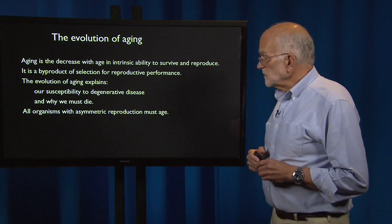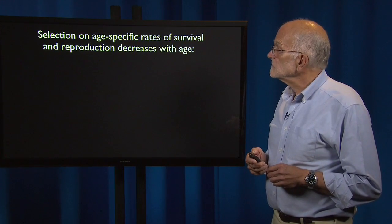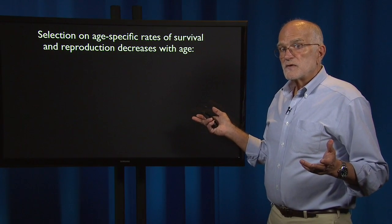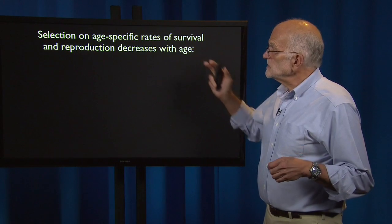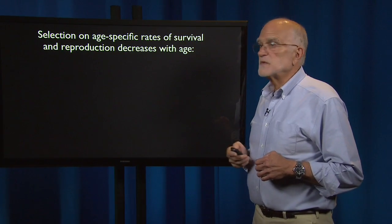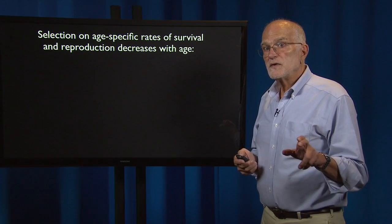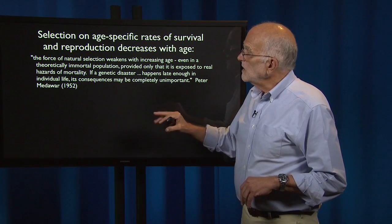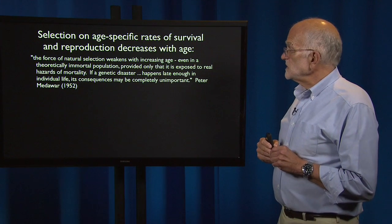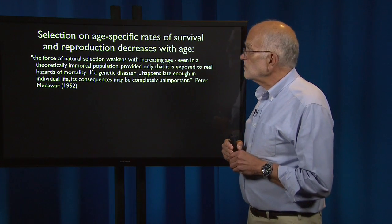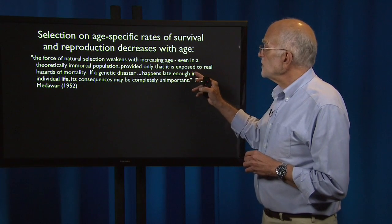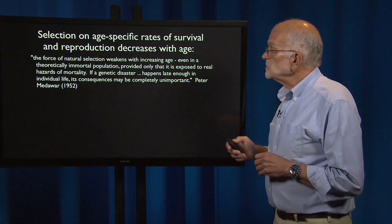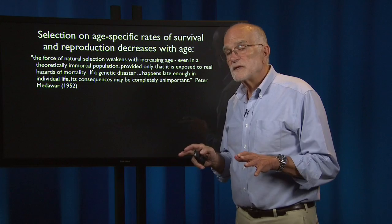All organisms with asymmetric reproduction must age. The first insight in the evolutionary theory of aging is that selection on age-specific rates of survival and reproduction decreases with age — selection is stronger on the young than it is on the old. This was stated by Peter Medawar: the force of natural selection weakens with increasing age, even in a theoretically immortal population, provided only that it is exposed to real hazards of mortality. If a genetic disaster happens late enough in an individual's life, its consequences may be completely unimportant.